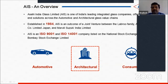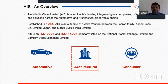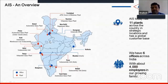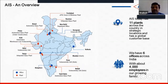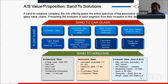AIS is one of India's leading integrated glass companies, over 35 years old, operating in automotive, architectural, and consumer glass segments. They have 11 plants across India covering all glass requirements for the country and for export, completing the full value chain from float glass production to end use.